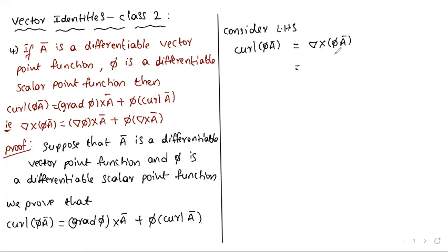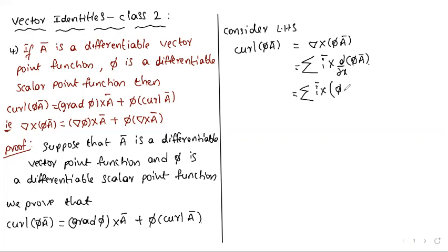Using summation notation, this becomes summation of i-bar cross ∂(πĀ)/∂x, which equals summation of i-bar cross [π·∂Ā/∂x plus ∂π/∂x·Ā] by the product rule.